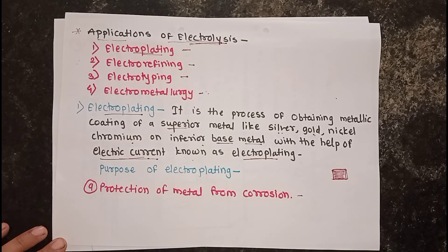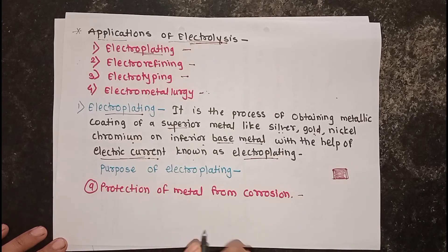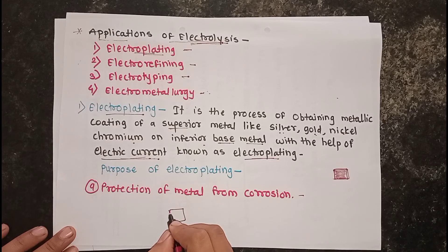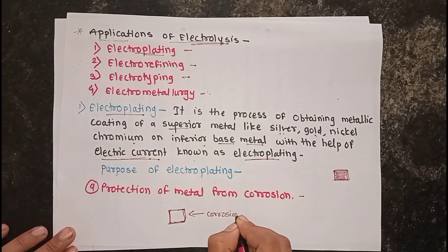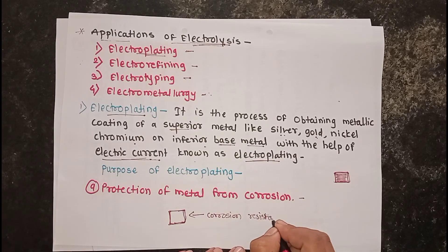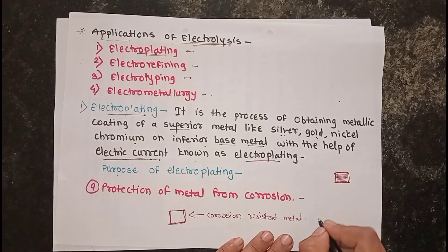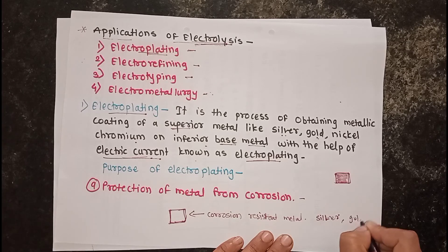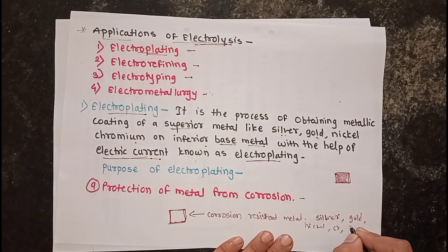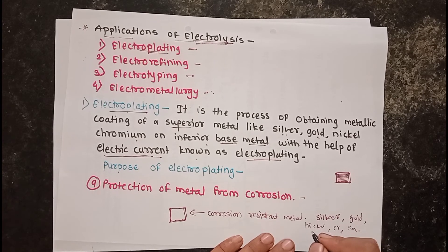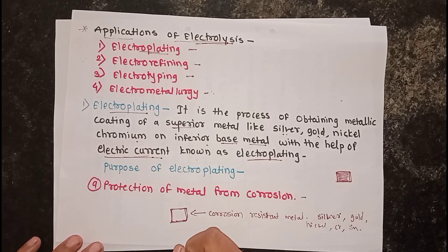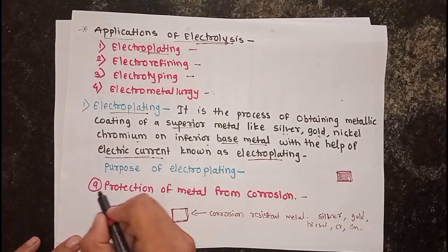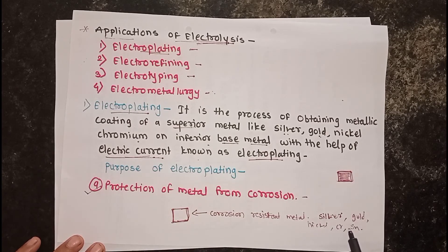To protect metals like iron or copper from corrosion and rusting, they are coated with corrosion-resistant metals such as silver, gold, nickel, chromium, or tin. A coating of corrosion-resistant metal is applied over the base metal. This is the first purpose of electroplating: protection of the metal from corrosion.